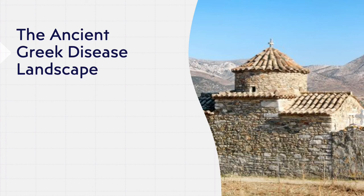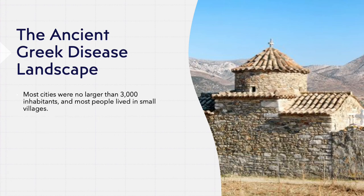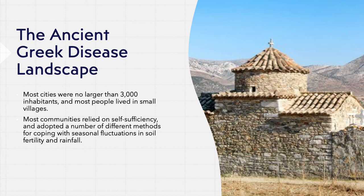Why was this? Why wasn't public health to be found within this civilization? For one, it should be noted that, based on everything we know, major epidemics appear to have been incredibly rare here. Compared to the world of the 21st century, that of ancient Greece was relatively small. Most cities were no larger than 3,000 inhabitants, and most people lived in small villages. There was also far less mobility than people have today. Most communities were self-sufficient, and they adopted a number of different methods for coping with seasonal fluctuations in soil fertility and rainfall. However, while one bad harvest could be overcome, a series of deficient farming seasons could lead to death and disaster.